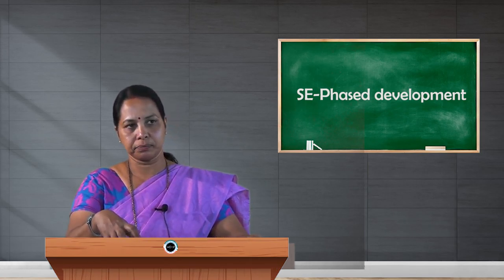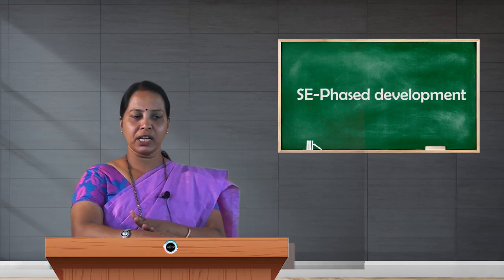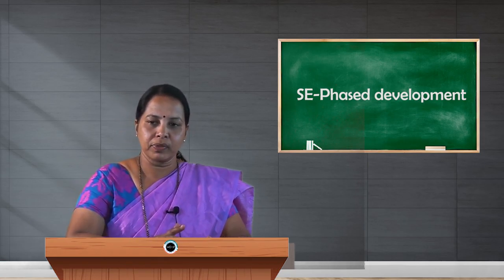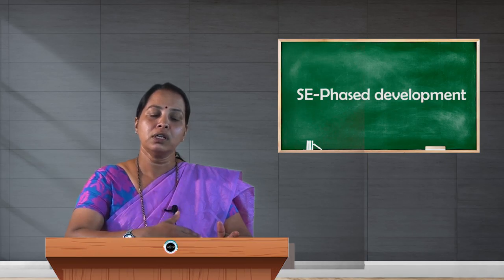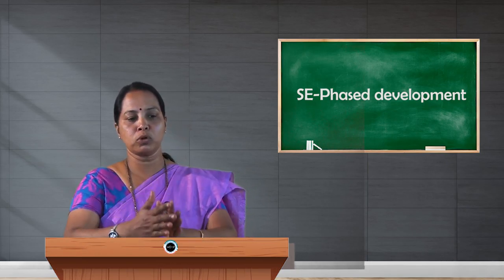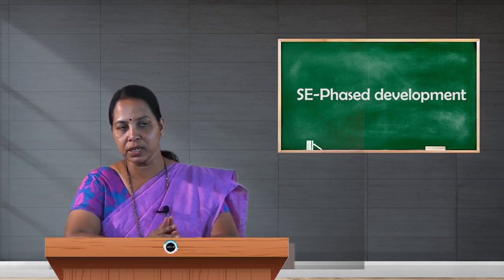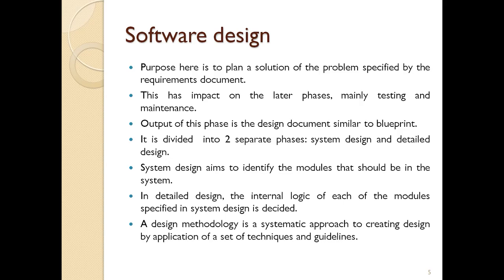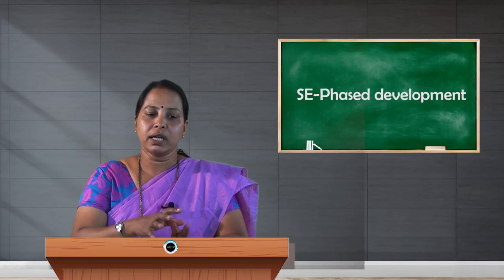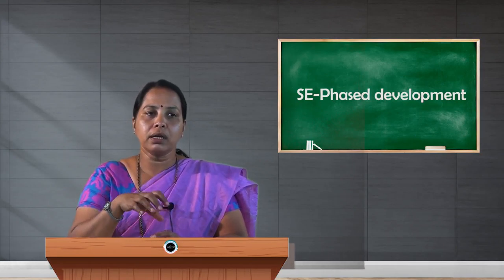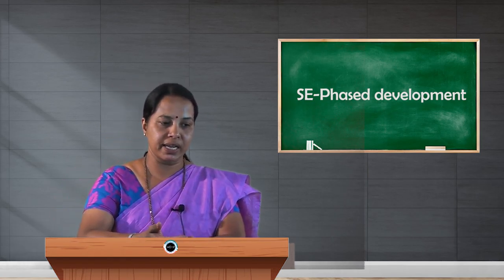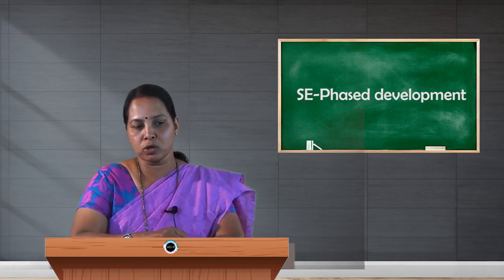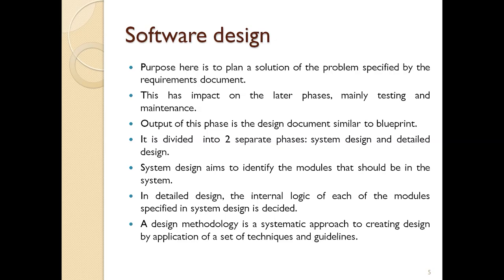Once understanding and specification is complete, the problem is clear and we can move to the solution part — from the problem domain to the solution domain. The next phase is software design, where the purpose is to plan a solution to the problem specified by the requirement document. Design has impact on the later phases, mainly testing and maintenance. The output of this phase is the design document, similar to a blueprint.